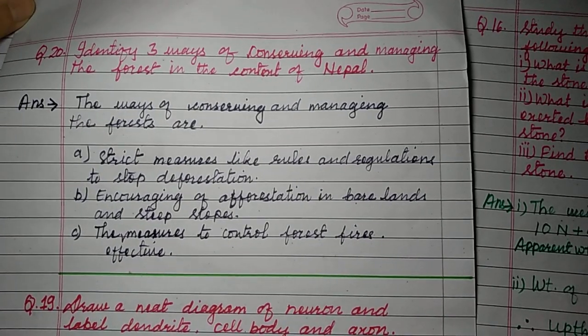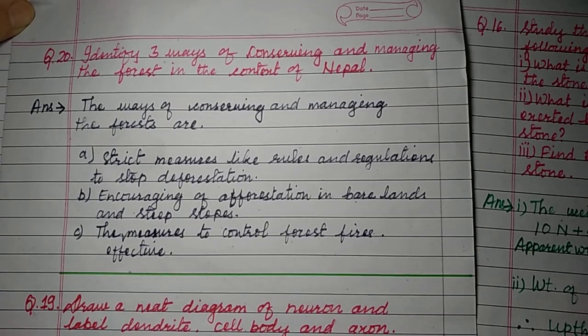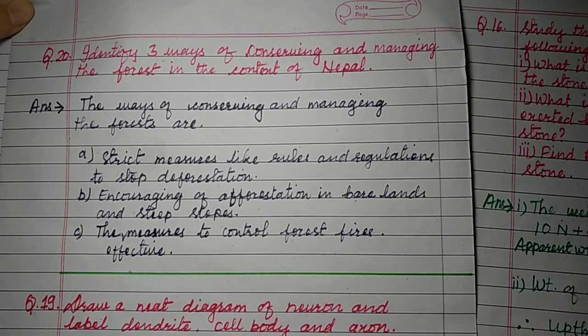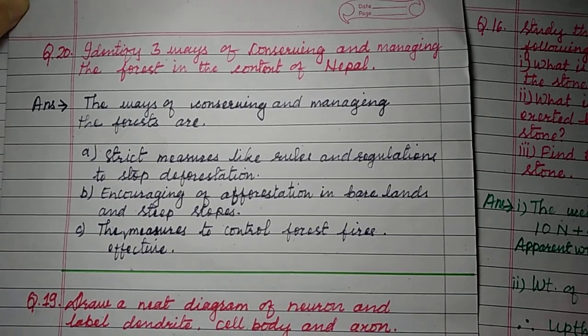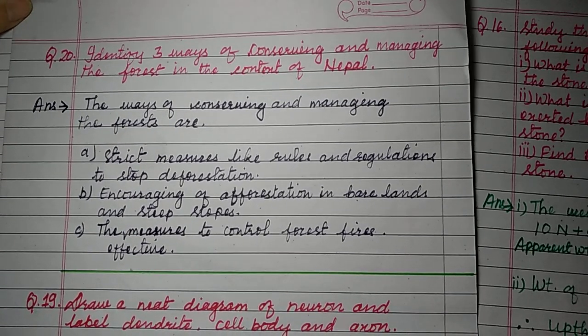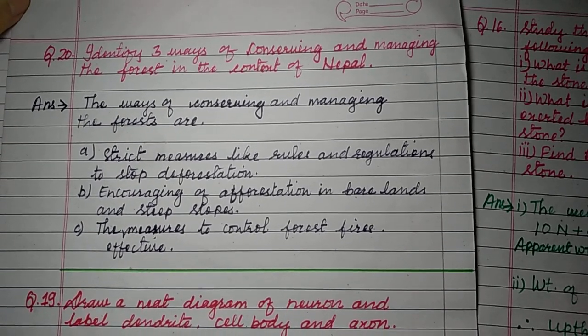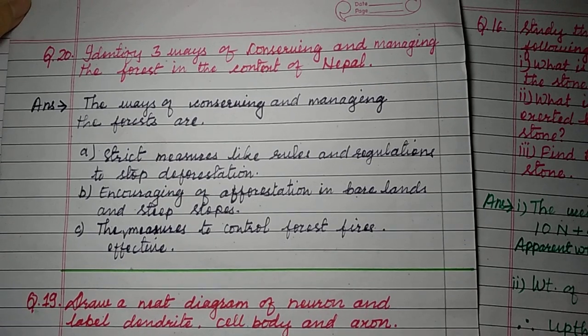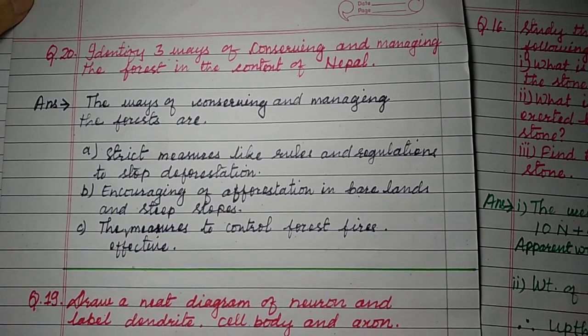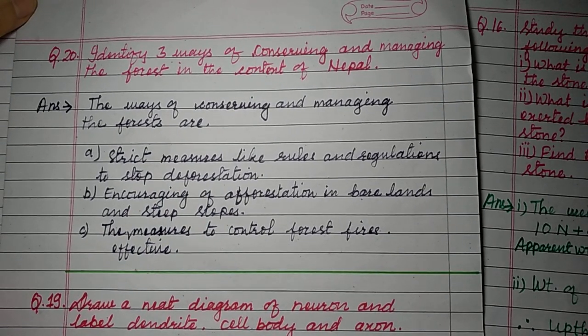Question number 19: draw a neat diagram of a neuron and label the dendrite, cell body, and axon. We'll see this later. Now we'll see question number 20.